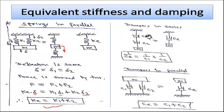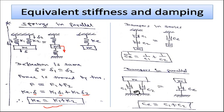The same principles apply to dampers. For two dampers in series with damping coefficients c₁ and c₂, the equivalent damping is: 1/cₑ = 1/c₁ + 1/c₂. For two dampers in parallel, the equivalent damping is: cₑ = c₁ + c₂.